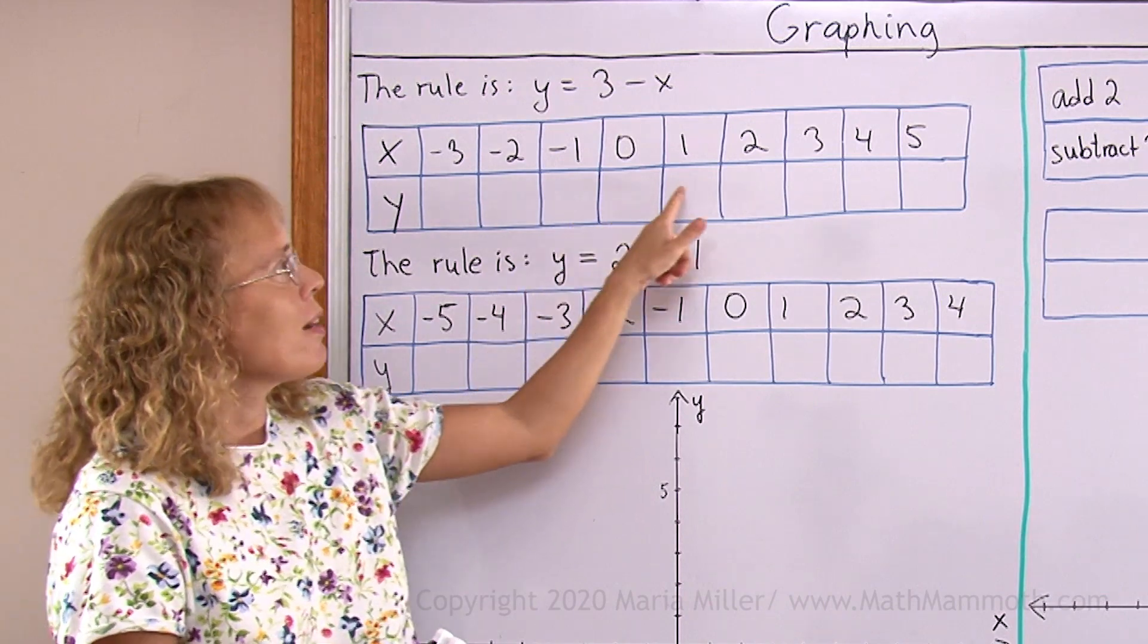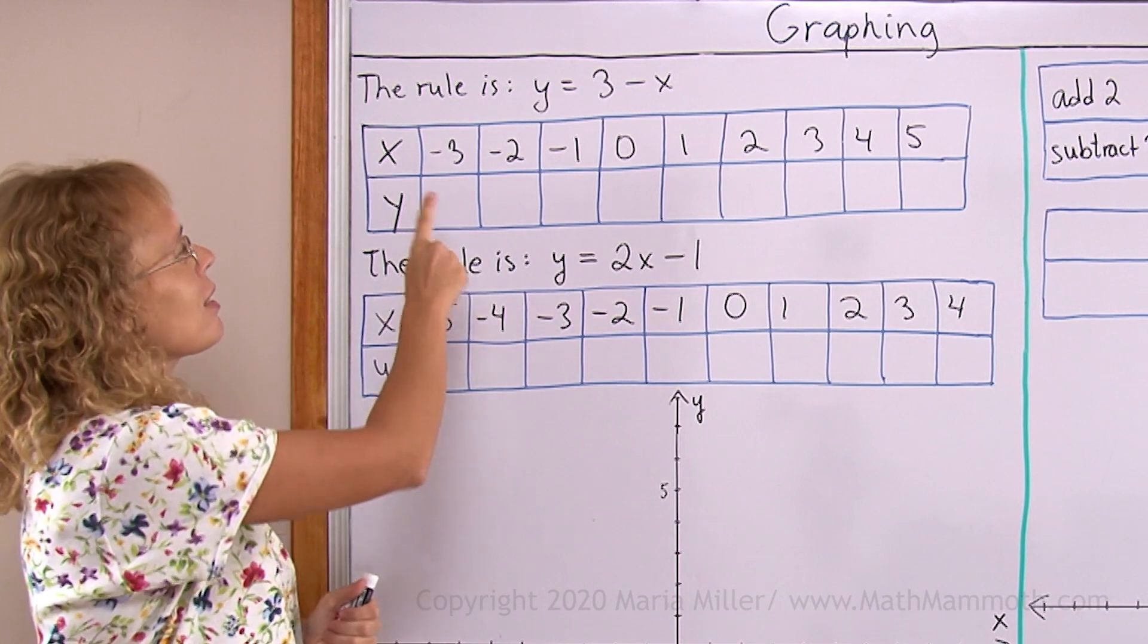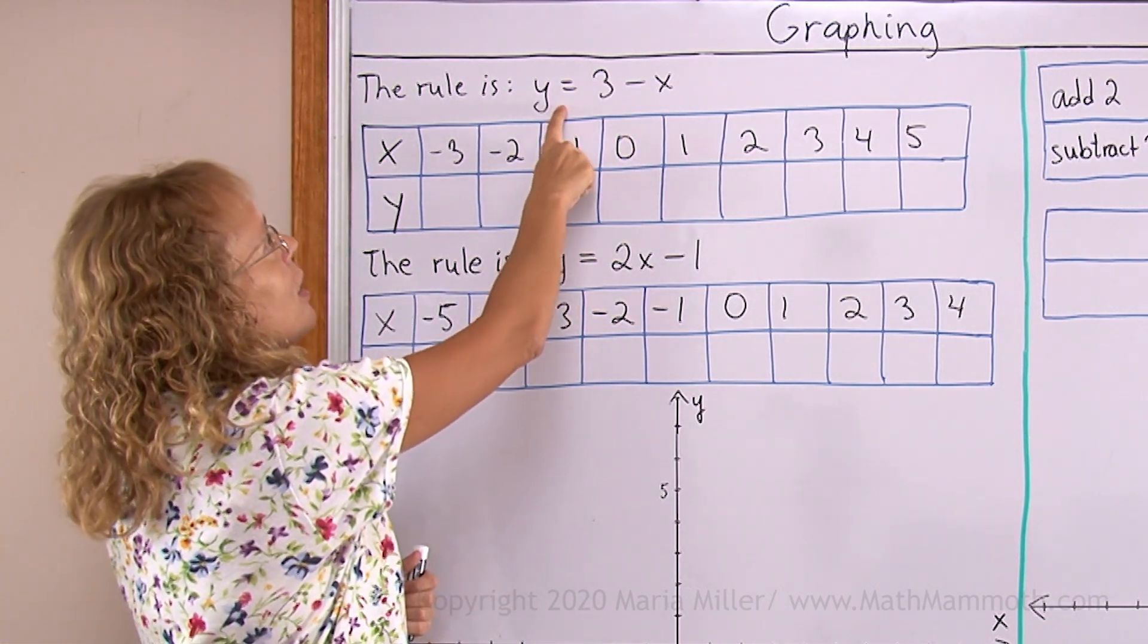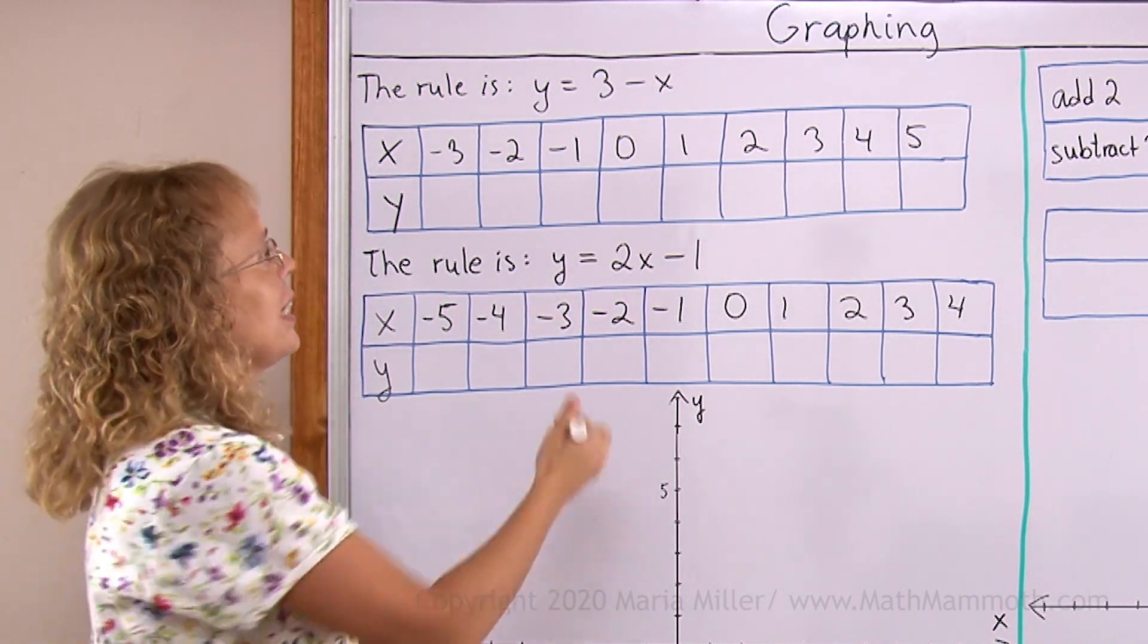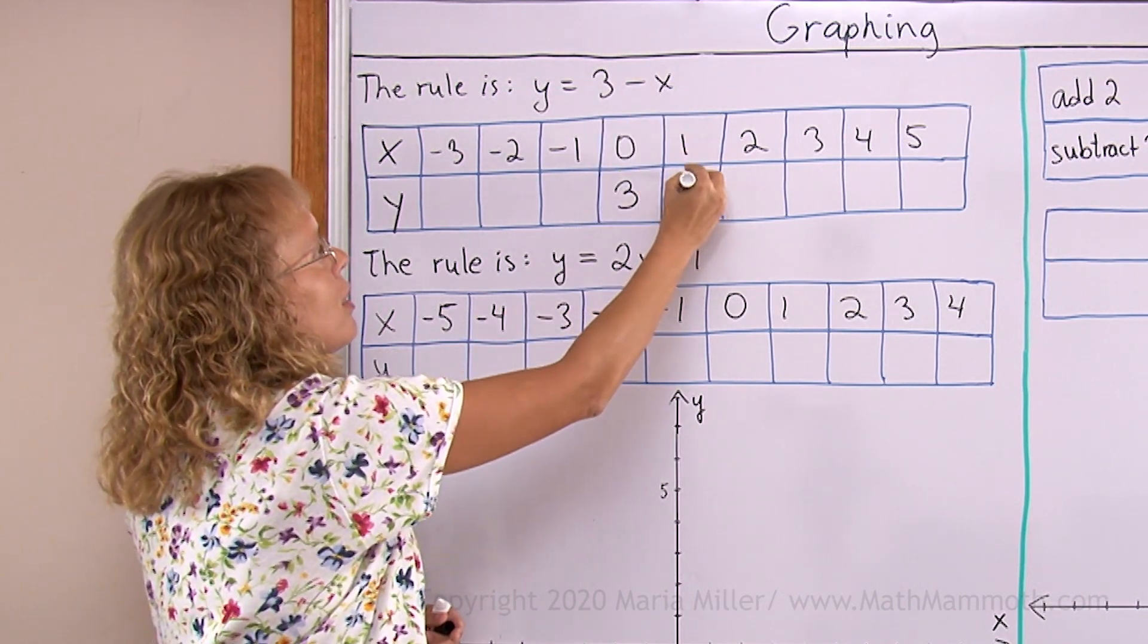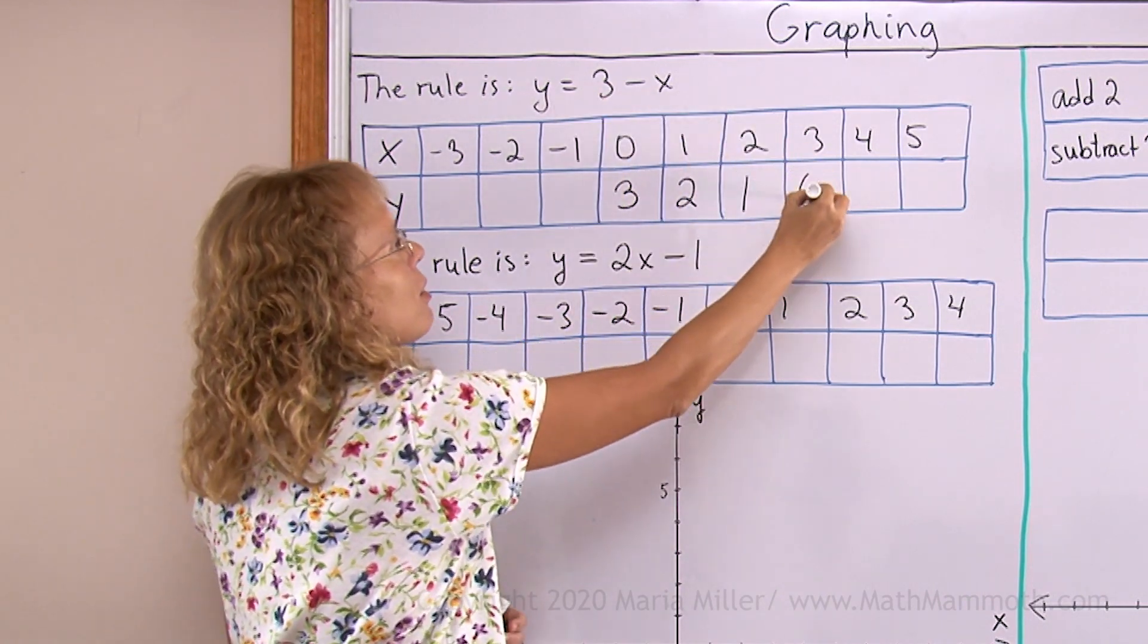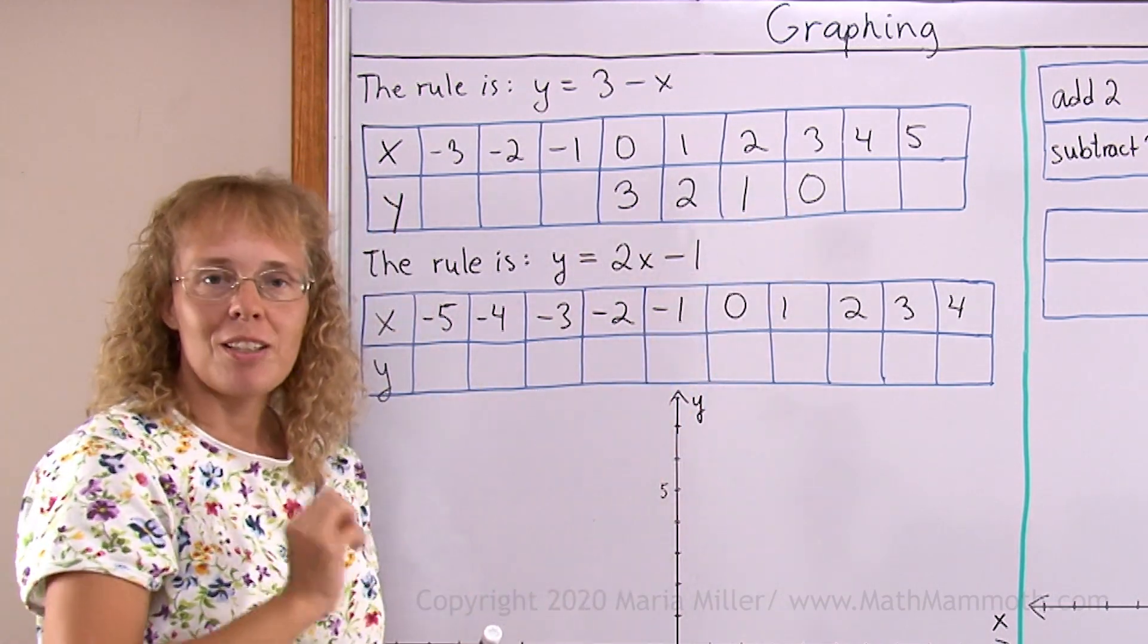But first we need to calculate all these y values using this rule. There's some negative numbers, maybe it looks a little difficult, but you can start for example here. If x is 0 then what is y? You use this rule, put 0 in place of x. So we get 3 minus 0, which is 3. And then if x is 1, 3 minus 1 is 2. Then 2, 3 minus 2, y will be 1. And then if x is 3, then y will be 0. You notice here a pattern: 3, 2, 1, 0. It's going down by 1's.